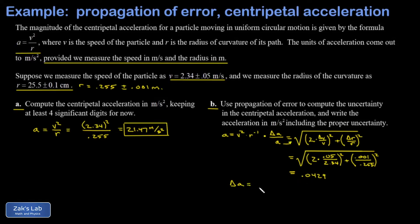So delta a is a times 0.0429. That's 21.47 times 0.0429, which gives me about 0.921, and that has units of meters per second squared. So there's the uncertainty in a. Our convention is to round uncertainties to one significant digit, so that's 0.9 meters per second squared.